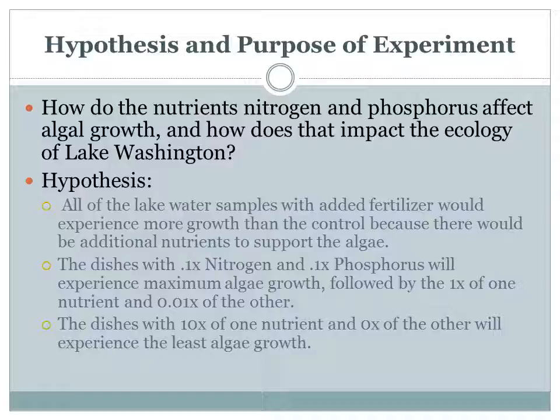I predicted that the dishes with a tenth the median amount of nitrogen and a tenth the median amount of phosphorus would have the most algal growth, followed closely by the dishes with the median amount of one nutrient and one hundredth the median of the other. However, I predicted that the dishes with ten times of one nutrient and zero of the other would experience less algal growth, because although there would be plenty of one nutrient, the lack of the other would be a limiting factor for the growth of the algae.